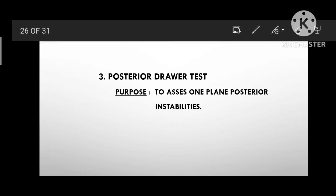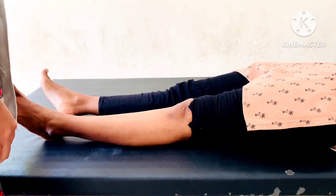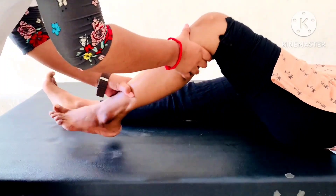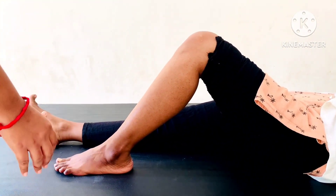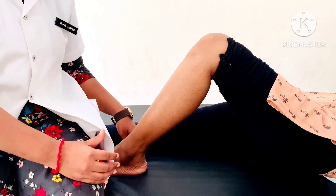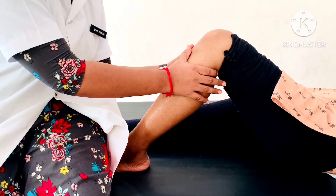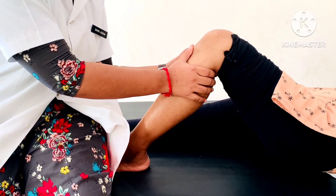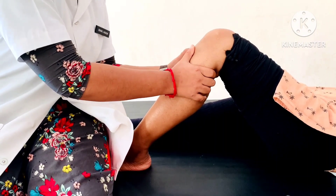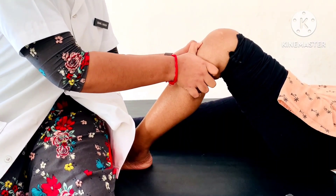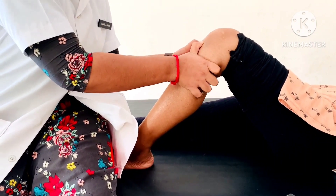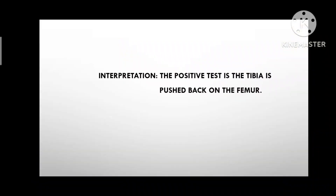Posterior Drawer Test. Purpose: to assess one plane posterior instability. Patient Position: supine lying with knee flexed 90 degrees and hip flexed 45 degrees. Therapist Position: sitting on the patient's forefoot with the foot in neutral rotation. The examiner's hands are placed around the tibia to ensure that the hamstring muscles are relaxed. The tibia is then drawn backward on the femur. Interpretation: the test is positive if the tibia is pushed back on the femur.